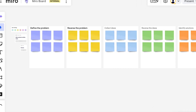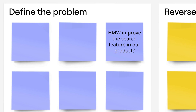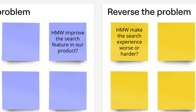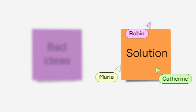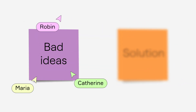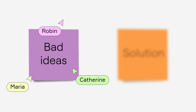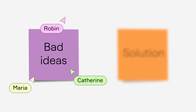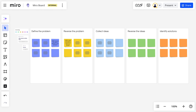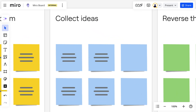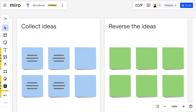So rather than ideating on how to improve the search, we ask: how might we make the search experience less effective for our support reps? Focusing on making things worse gets us past the mental barrier of having to come up with good or right solutions. We can relax and lean into the creative process. Of course, once we've made our problem worse, it's time for another reversal where every one of our bad ideas turns into a potential solution.